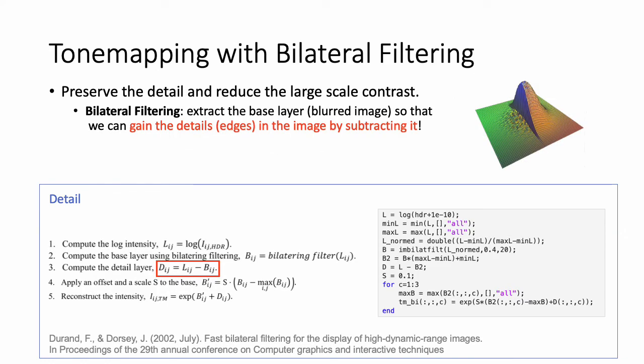However, the tone mapping may make the image blurry. The mapping with bilateral filtering preserves the detail and reduces the large-scale contrast. Bilateral filtering extracts a base layer, which means blurred image, so that we can gain the detailed edges in the image by subtracting it. Also, please see the paper for this detail.